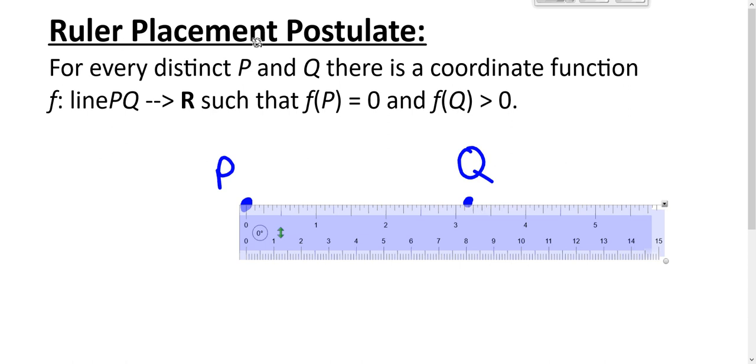The ruler placement postulate is called the ruler placement postulate because you can always place your ruler so that P is on zero and Q is some positive number.